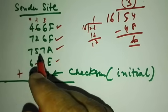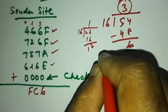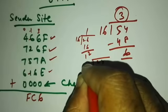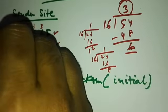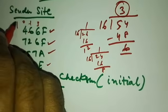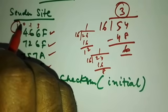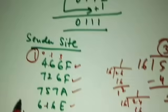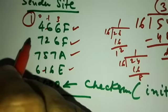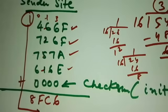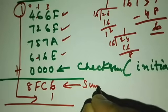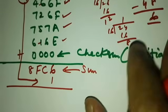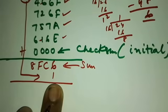Next column: 7 plus 7 is 14, plus 4 is 18, plus 6 is 24. 24 divided by 16 gives 1 carry and remainder 8. Using 1's complement addition, this carry of 1 is added back. So we got this intermediate sum, and after adding the carry, we get the actual sum.